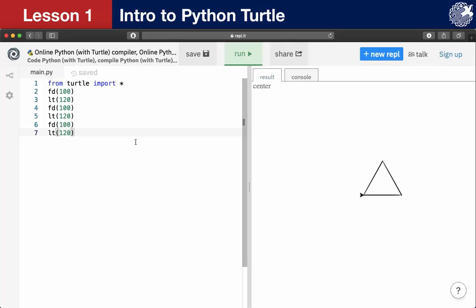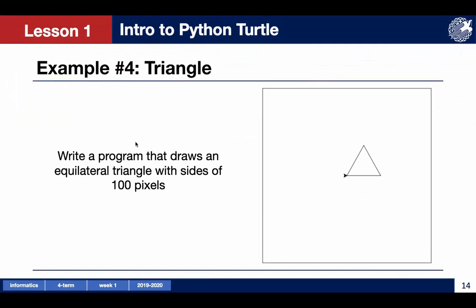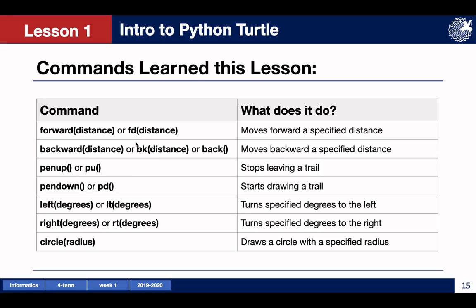Congratulations, we have finished our first lesson. Now let's sum up what we have learned so far. We have learned forward and backward commands which allow us to move forward or backward with a specified distance respectively. Pen up and pen down commands which stop or start leaving a trail of itself. Left and right commands which allow us to turn left or right to specified degrees. And last but not least, circle command which allows us to draw a circle with a specified radius.